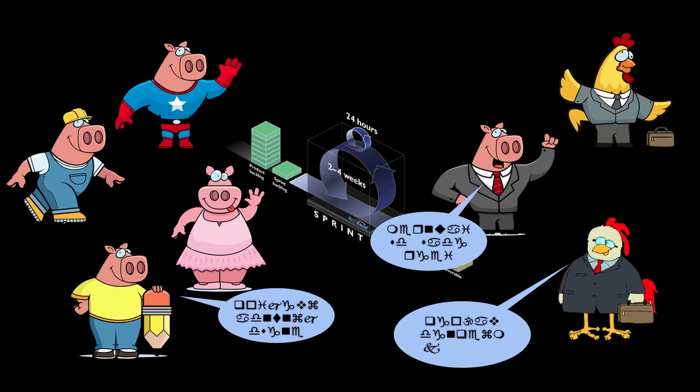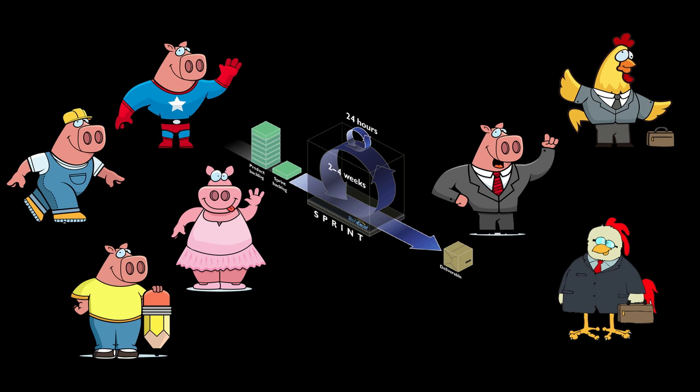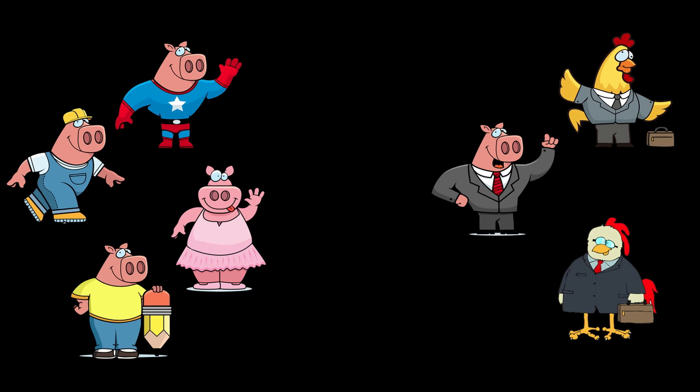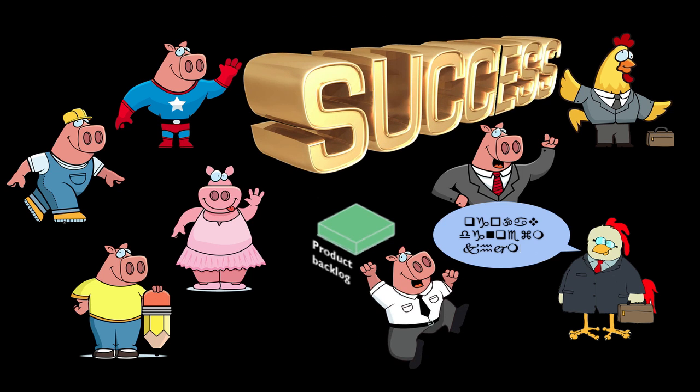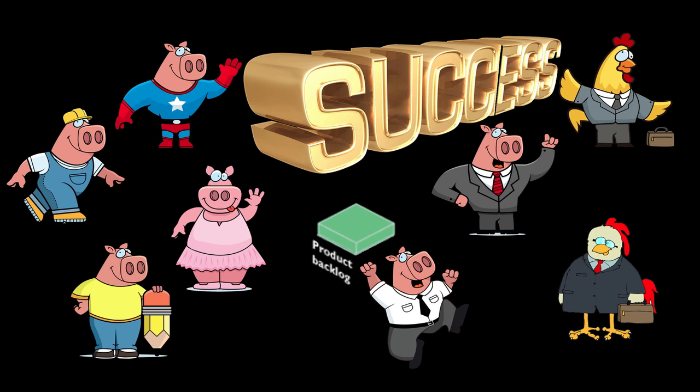Sprints are repeated and reviewed until the product backlog is empty or the product owner decides that enough business value has been delivered to declare the project a success. It is not at all uncommon for the product owner to declare success with 20-30% of the initial backlog items still remaining. This is usually based on feedback from the end users who see the immediate benefit of the product in its current state. The leftover 20-30% of the initial backlog items can be skipped, saving time and resources. These are items that a traditional development process would have included, but which through an iterative and adaptive process, the business owners and end users realized were not as valuable as initially thought.